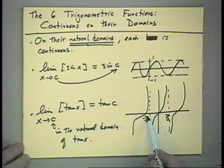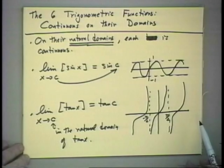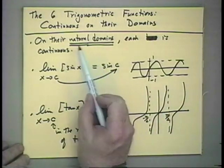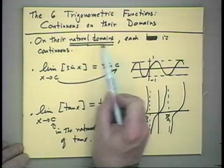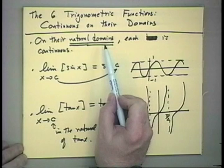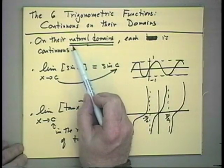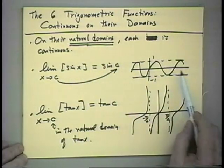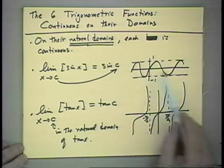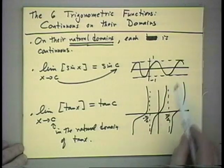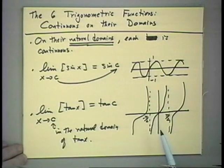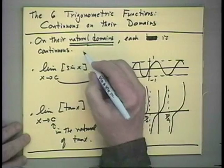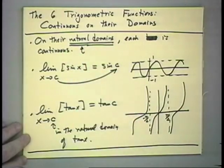You have to read carefully. This says that on their domains, the trig functions are continuous. If you ask whether they're continuous on all the real numbers, the sine and cosine functions would be continuous, but the others will not be. So just keep that in mind — this is a lesson in careful reading.